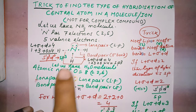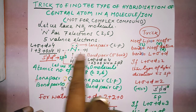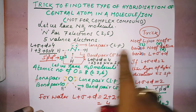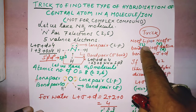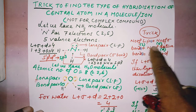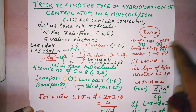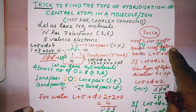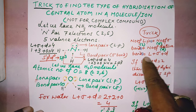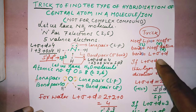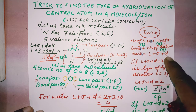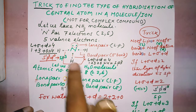To find the type of hybridization of nitrogen in ammonia, we follow this trick. L is the number of lone pairs on the central atom, sigma is the number of sigma bonds formed by the central atom, and D is the number of dative bonds formed by the central atom. So the formula is: L plus sigma plus D.